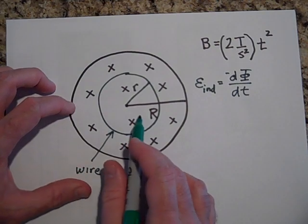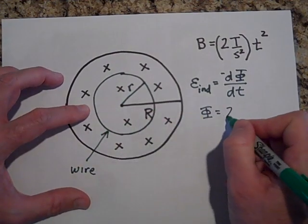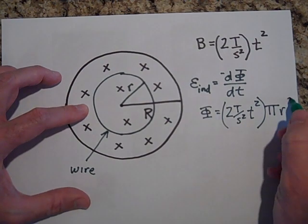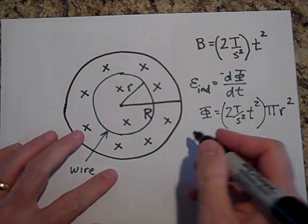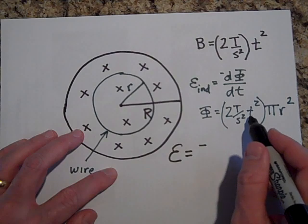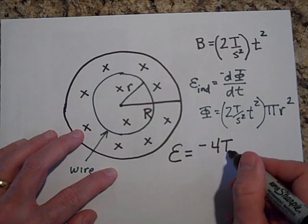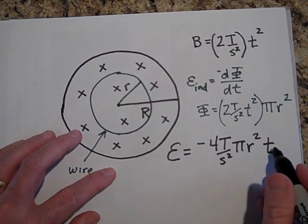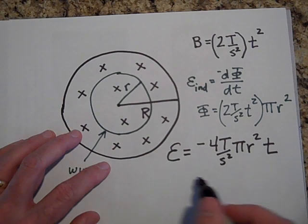The flux at any given time equals B times the area, which is B times π r². The EMF induced is the negative derivative of this with respect to time. Taking that derivative gives negative 4t per second squared times π r². That's the induced EMF — check that derivative, but assuming everything else is constant, that's correct.